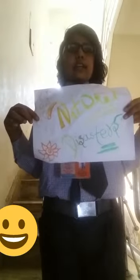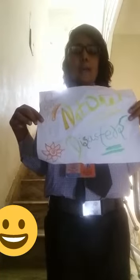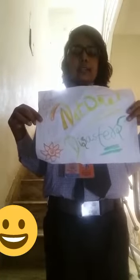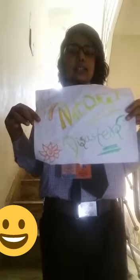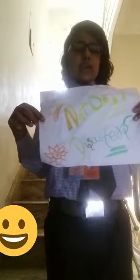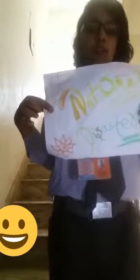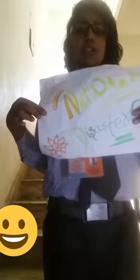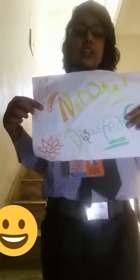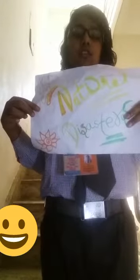Second, volcano. Volcano is a crack or opening in the earth's surface, through which hot gases and molten rocks come out of the earth. There are three types of volcanoes: first, active volcano; second, dormant volcano; third, extinct volcano.